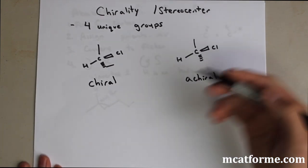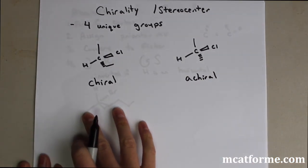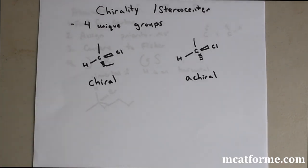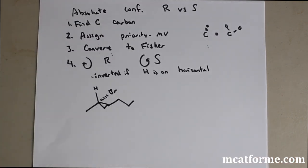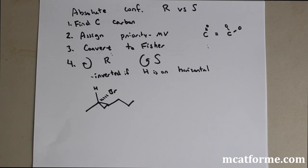It should be pretty simple to distinguish between chiral and achiral. If something is chiral, it can have an absolute configuration. Absolute configuration is what we call R or S. Hopefully you remember this from organic chemistry, but here's a simple way to do it. It can be tricky at first, but once you understand it, you'll never have a problem with any molecule you're given.